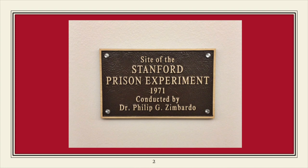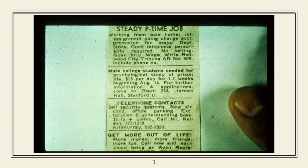On August 14th of 1971, the Stanford Prison Experiment was underway at Stanford University. The overseer of this experiment and the prison superintendent was Philip Zimbardo, along with his fellow colleagues Craig Henney, W. Curtis Banks, and David Jaffe. Twenty-four male college students were chosen out of 75 volunteers to be paid $15 a day to be a part of a prison simulation.